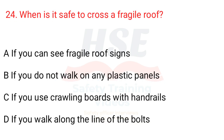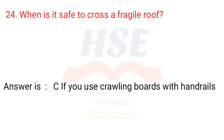Question 24: When is it safe to cross a fragile roof? A. If you can see fragile roof signs. B. If you do not walk on any plastic panels. C. If you use crawling boards with handrails. D. If you walk along the line of the bolts. Answer is C. If you use crawling boards with handrails.